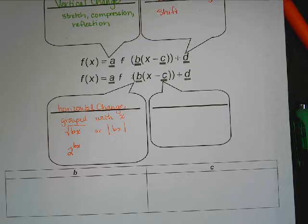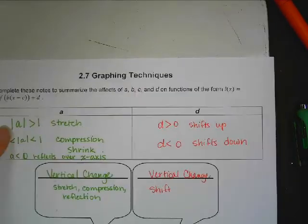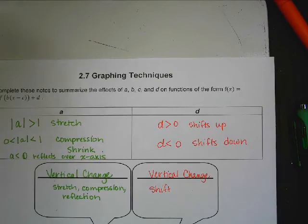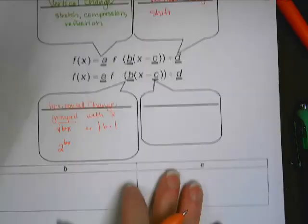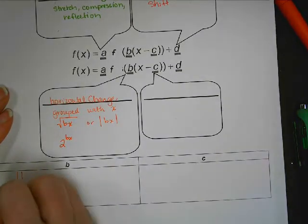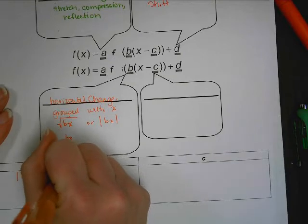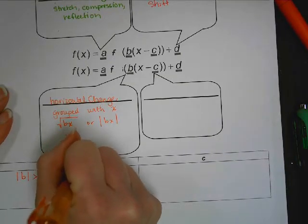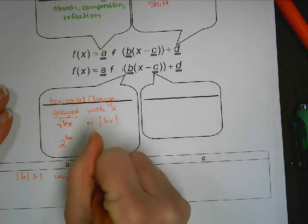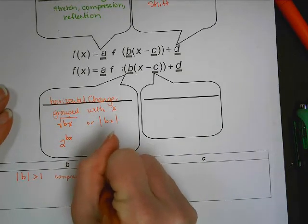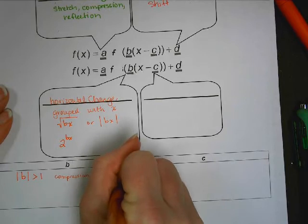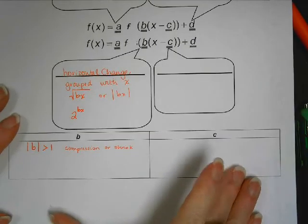So whatever's grouping them together doesn't matter. If it's grouped with x, it's a horizontal change. And the thing about x is that x is a big fat liar. Everything that x says is the exact opposite of what x does. So if A is greater than 1, that's a stretch. But if B is greater than 1, the absolute value of B is greater than 1, it is not a stretch. It's a compression. It does exactly backwards of what it says.